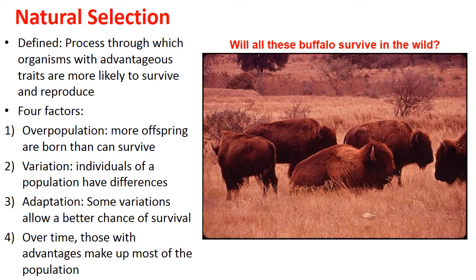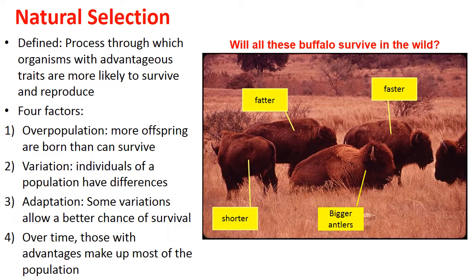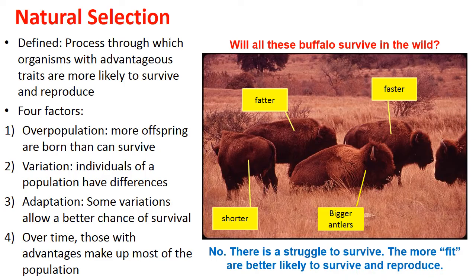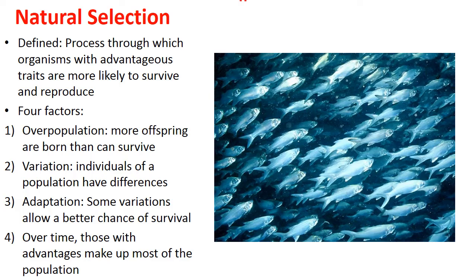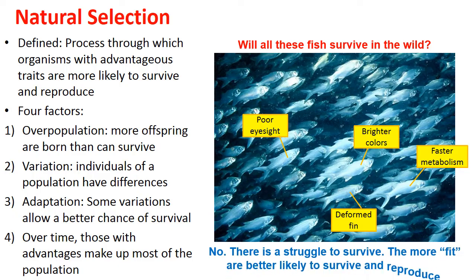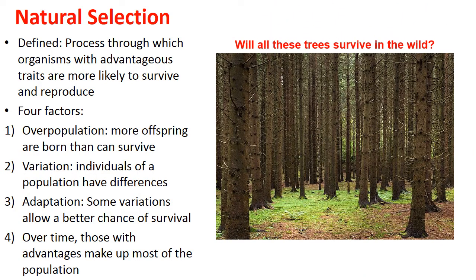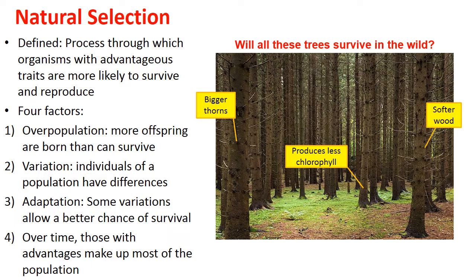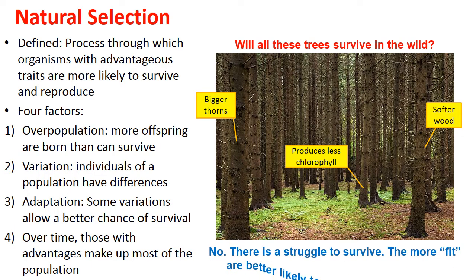The same principle applies to buffaloes — they all have little variations, but not all will survive. The more fit ones are better able to survive and reproduce. Fish also have tiny variations: one might have a deformed fin, another poor eyesight, another a faster metabolism. Plants and trees are no different — some might produce less chlorophyll, some have softer wood. Only the more fit plants and trees will survive and reproduce.